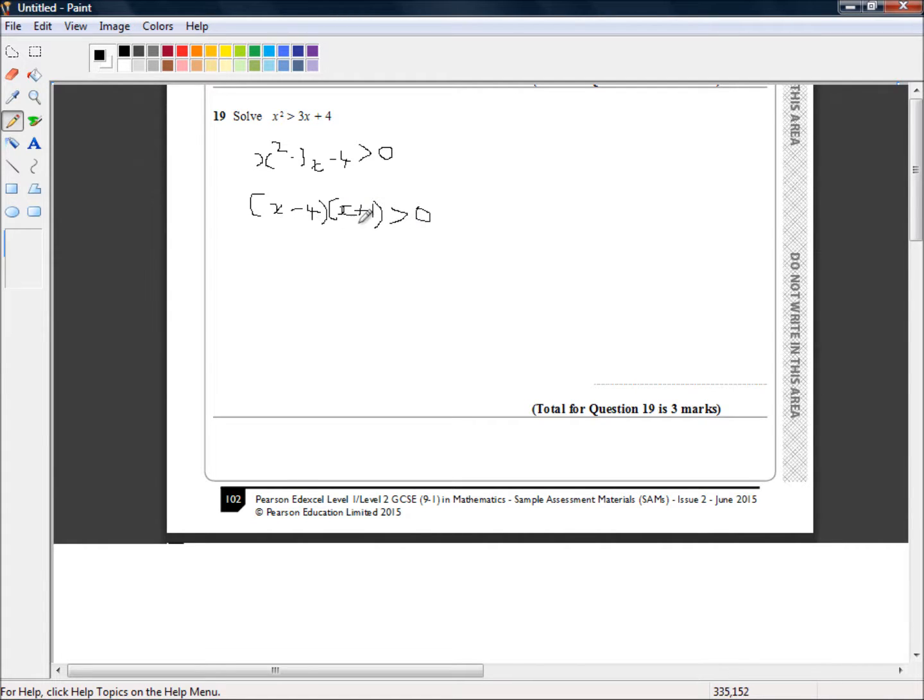Now if this was an equation the next thing we'd do is look for the zeros. So if x equals 4, x equals 4 would be a solution if that was an equal sign. And also if x was negative 1 then negative 1 plus 1 is 0 and 0 times anything is 0. So negative 1 is also a solution. But this is an inequality not an equality. But even so we know that something special is going on between x is negative 1 and x is positive 4.